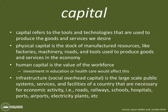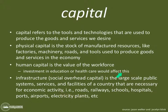The third factor is capital. It refers to all of the tools and technologies that are used to produce goods and services we desire. Physical capital is the stock of manufactured resources like factories, machinery, roads, and tools used to produce goods and services in an economy. Human capital is the value of the workforce — investment in education and healthcare affects this. As you go through this course, human capital refers to how well educated your people are. If they're really well educated, they're going to be more flexible in the things that they can do.